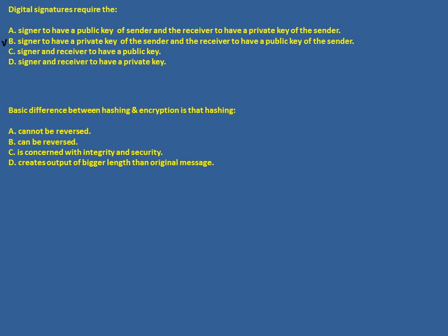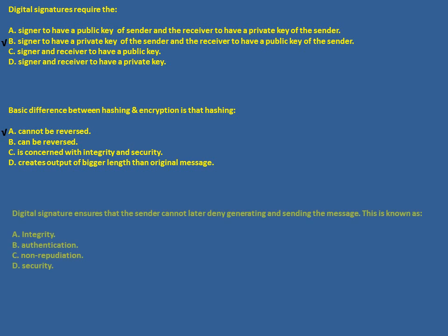The basic difference between hashing and encryption is that hashing cannot be reversed — from a hash value you cannot convert back to the original message. But with encryption, you can encrypt a message to get ciphertext and also decrypt that ciphertext to get the original message. Digital signature ensures that the sender cannot later deny sending the message — this is known as non-repudiation.